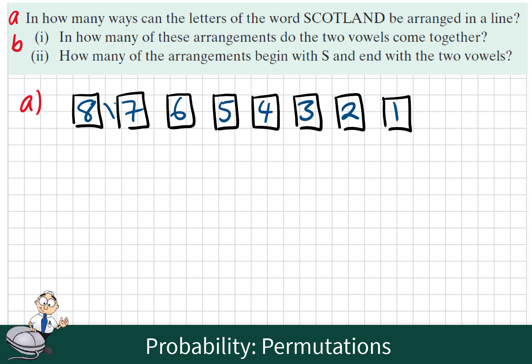The fundamental principle of counting says we multiply our options. 8 multiplied by 7, 6, 5, 4, 3, 2, 1 is called 8 factorial. So if we took out the calculator, we could write in 8 factorial, and we evaluate this, and we see that it's 40,320.